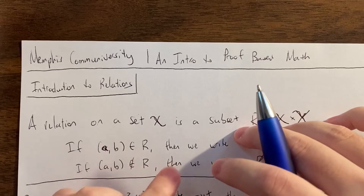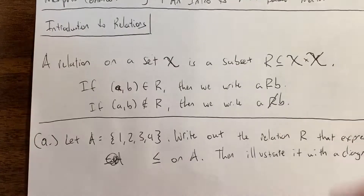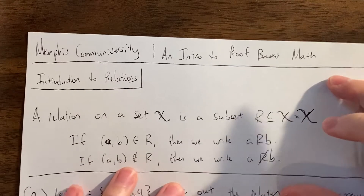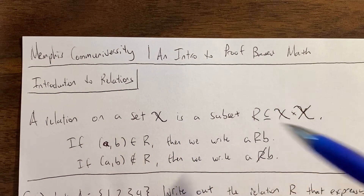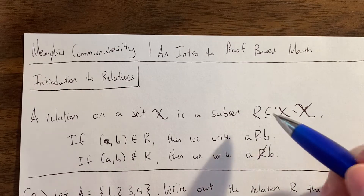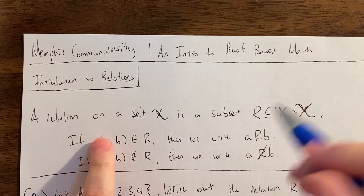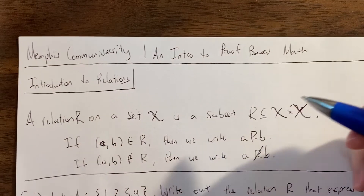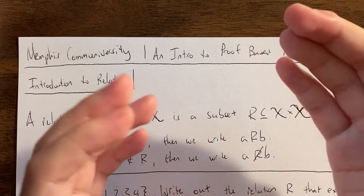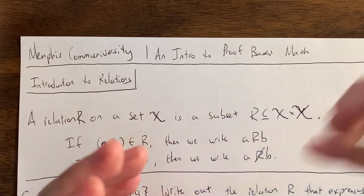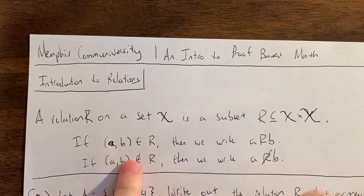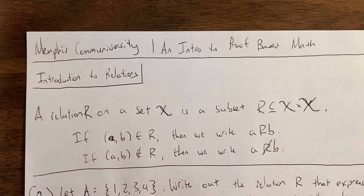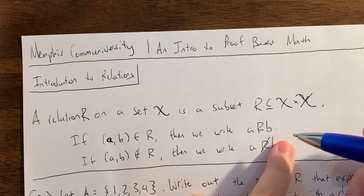What we're going to do today is define rigorously what a relation is, and draw a picture to help us understand how relations work in mathematics. A relation on a set X is a subset of the Cartesian product of X with itself. It consists of elements where there are two points — the first is an X and the second is an X. We say that A and B have the relation if (A, B) is in R, and we write A R B to show that A is related to B.